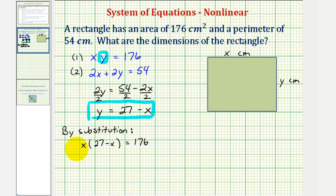Clearing the parentheses by distributing x gives us 27x minus x squared equals 176. Notice we have a quadratic equation, so we'll set this equal to zero and solve for x.